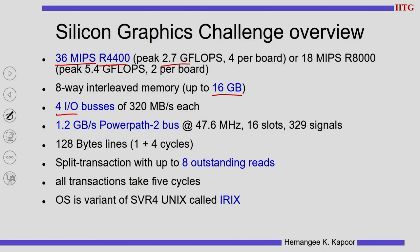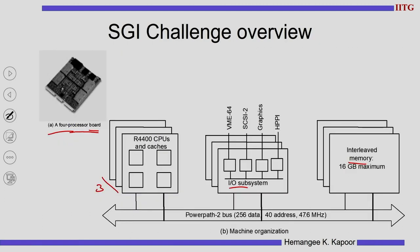These parameters give you a feel of how big and scalable such systems are. It is connected to a 1.2 Gbps PowerPath bus, cache lines are 128 bytes, it can handle eight outstanding requests at a time, and all transactions take five cycles. The operating system is a variant of UNIX called IRIX. This is the system, and the PowerPath bus is what we are going to discuss for split transactions.